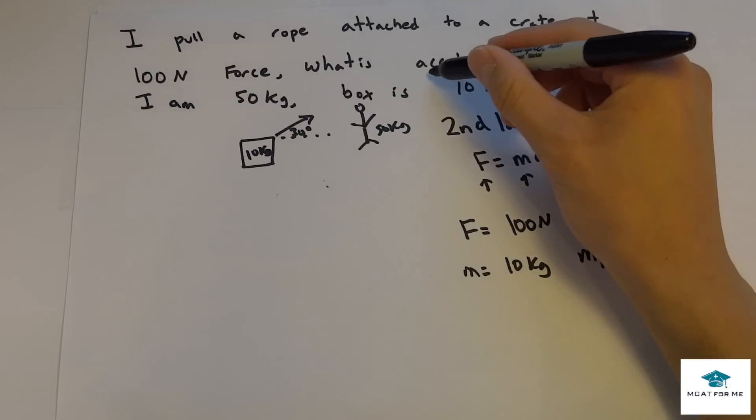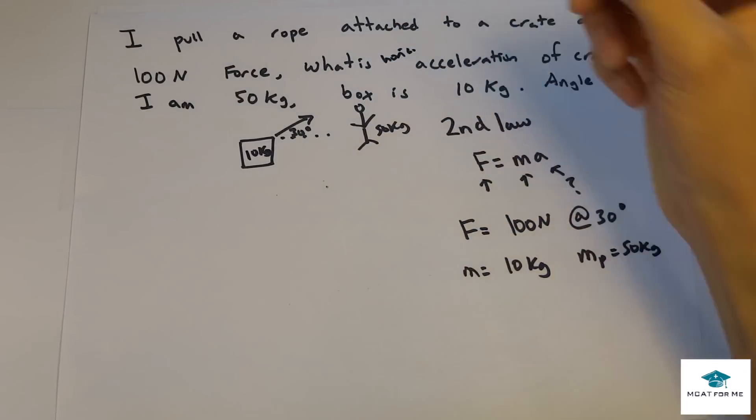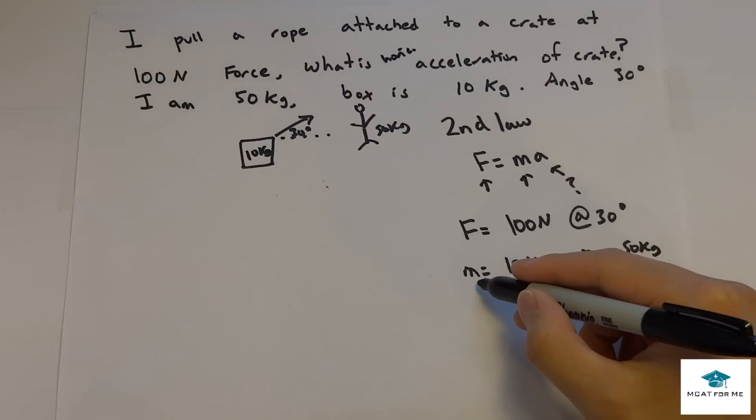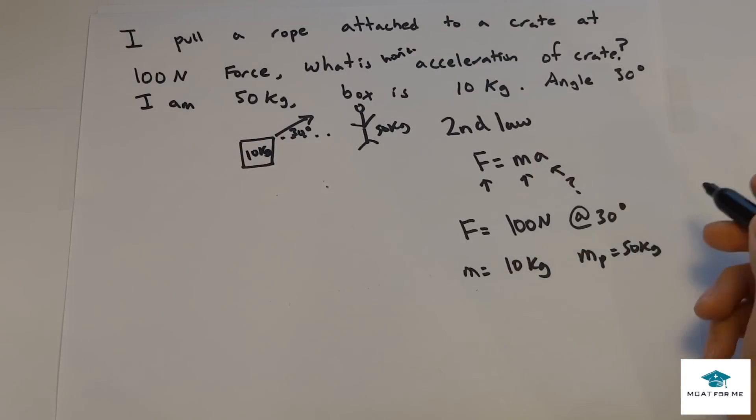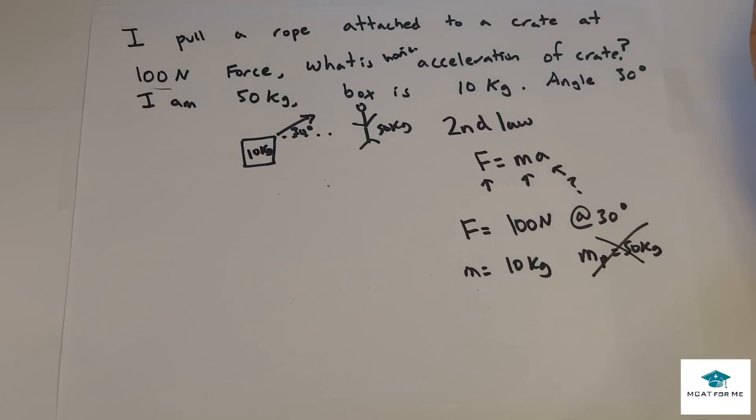And we want to know the acceleration of the crate, the horizontal acceleration of the crate. And so what do you think we'll need to know? The mass of the box or the mass of the person? Well we don't need to know the mass of the person because it's irrelevant. Whether or not it was a big guy pulling it or a small guy, we still know that they're exerting this 100 newtons.